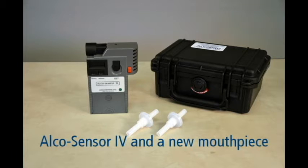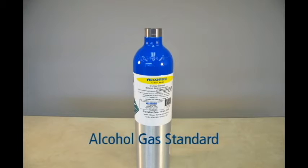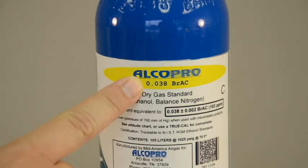Your AlkaSensor 4 device and a new mouthpiece. The function switch key that came with your device. You will need an alcohol gas standard. We will be using a dry gas standard with an ethanol content of 0.038 BrAC at sea level.